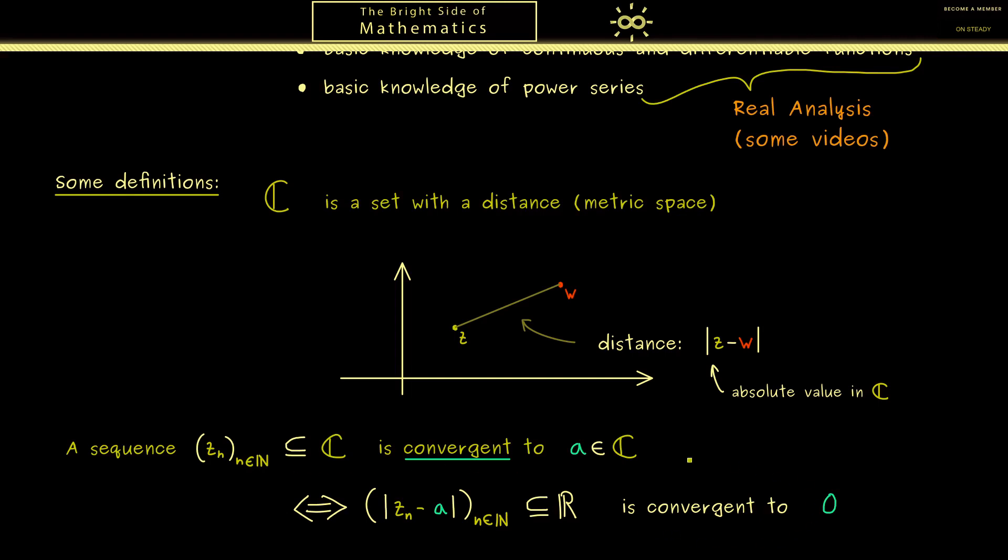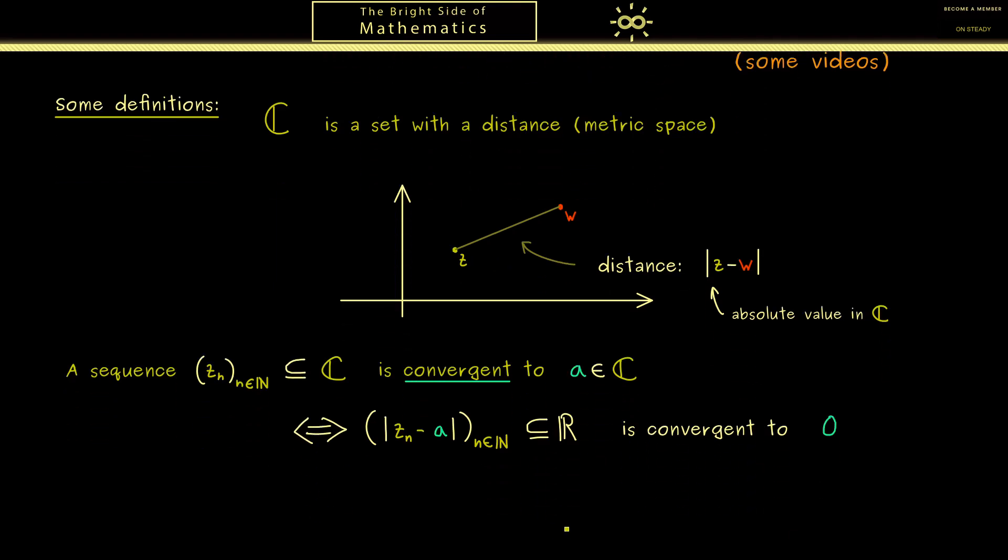Now if you don't remember the definition of convergence for real numbers let's recall it. So we find that for all positive numbers we can call epsilon, there exists an index we can call capital N, such that for all indices afterwards, so n is greater or equal than capital N, we get that the distance between z_n and the point a is less than epsilon.